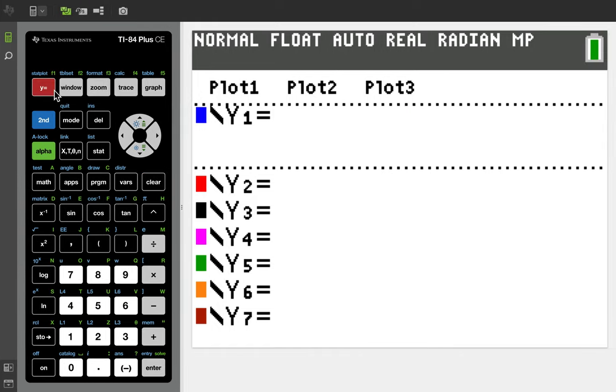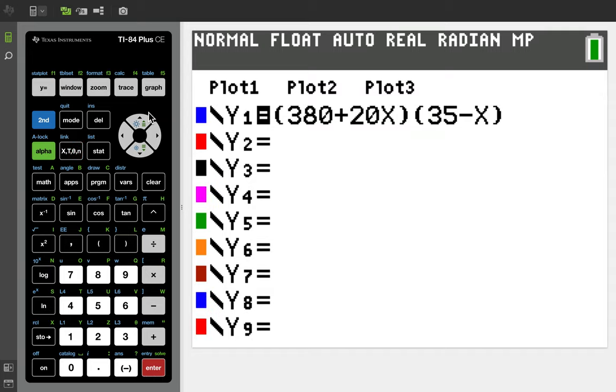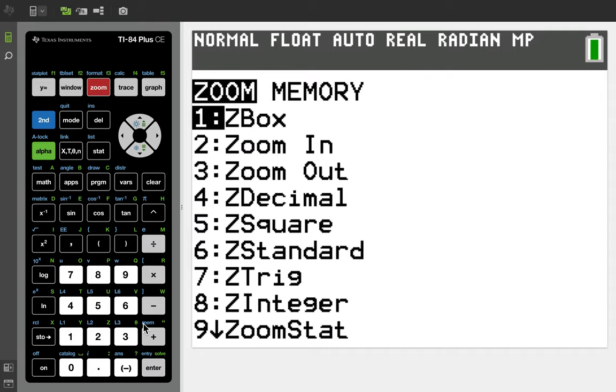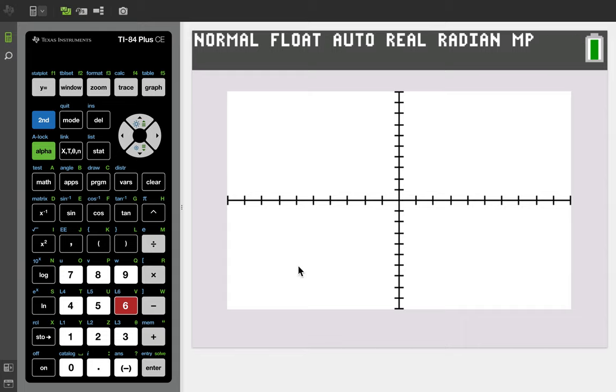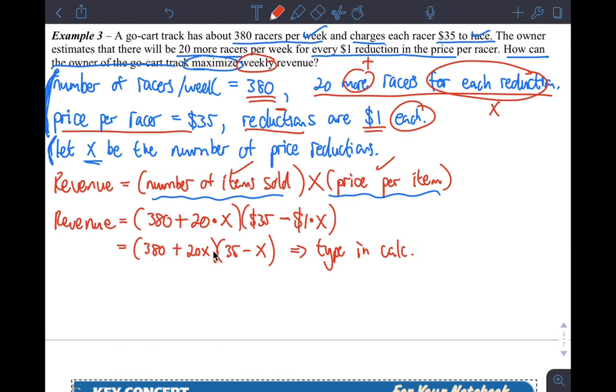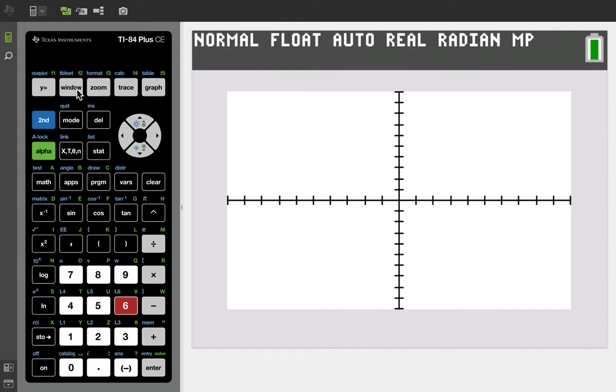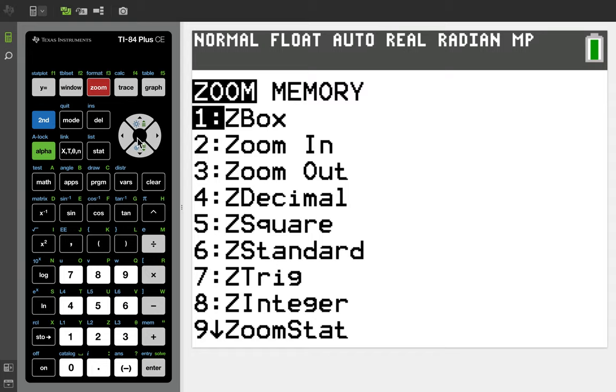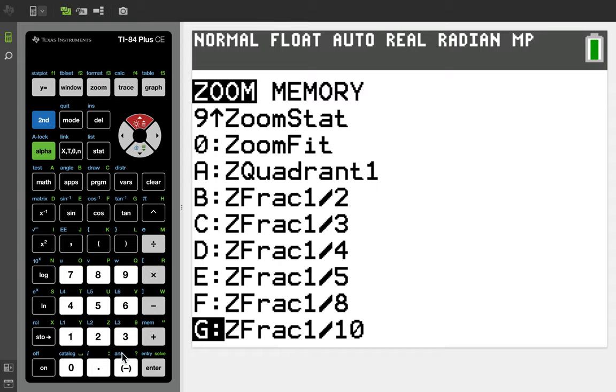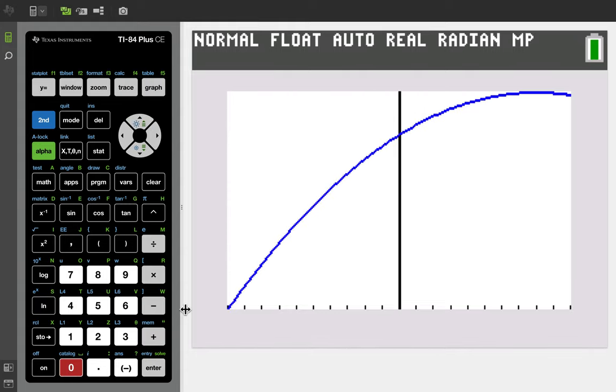You just hit Y equals and then just type exactly what it said there. So 380 plus 20X times 35 minus X. That's it. And then the problem is if you graph this with the standard zoom, you see nothing. That's because if you look at the equation, the numbers are pretty big. So try zoom fit, which is zero. If you push up arrow there, zoom fit. That's pretty good. You can see here is the maximum. So that's actually good enough if you just do zoom fit.